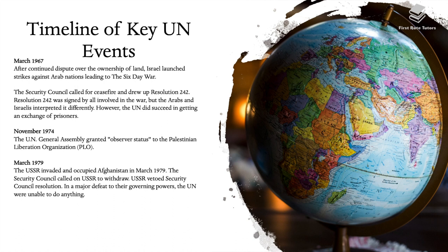In November 1974, the UN General Assembly granted observer status to the Palestinian Liberation Organization. In 1979, the USSR invaded and occupied Afghanistan. The Security Council called on the USSR to withdraw, but the USSR vetoed the Security Council resolution, and in a major defeat to their governing powers, the UN was unable to do anything.